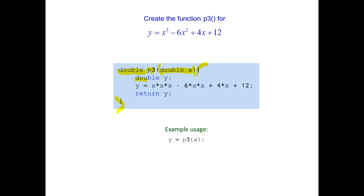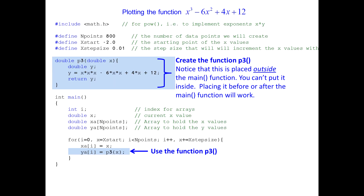We're going to have an internal variable called y, and here is where we do the actual computation. Notice we're hard-coding the values — 6 and 4 — so this is a very specific, not general-purpose function. Once we've computed that, we return the value y. To use it, all we have to say is y equals p3, passing x as the argument.